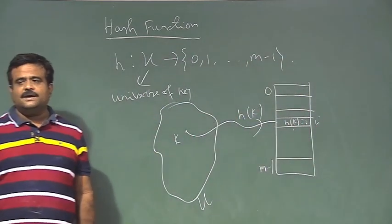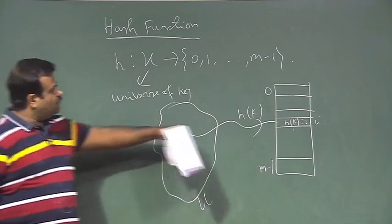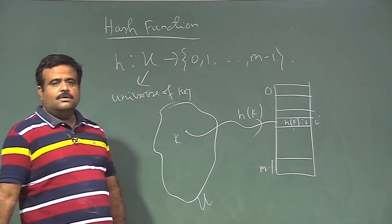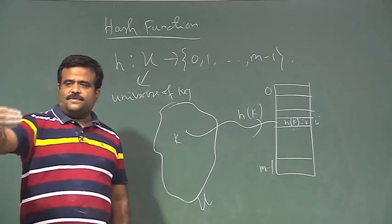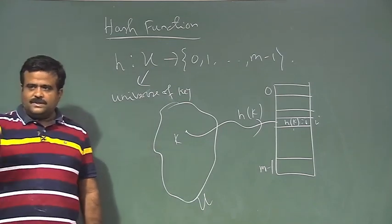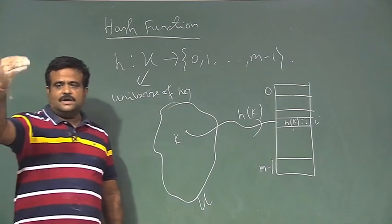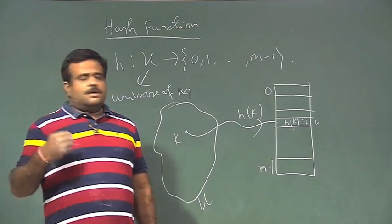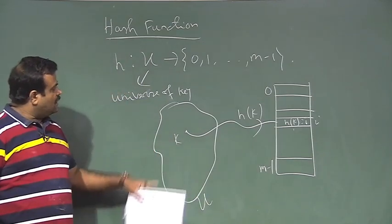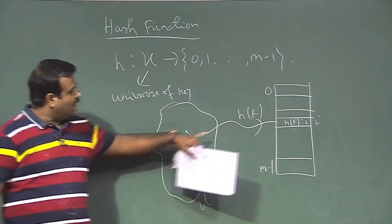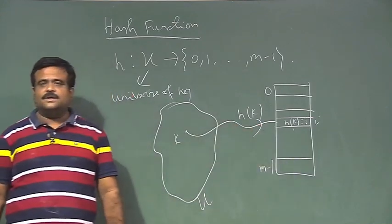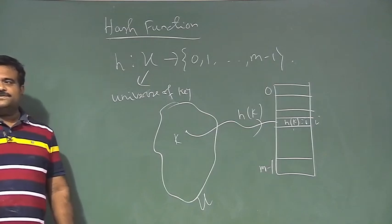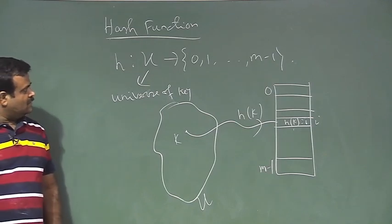The hash function takes a key and gives us a slot — basically a value from 0 to m-1. If we are allowed a table size up to m, our hash function maps any key to a slot in the range 0 to m-1. Any such function is called a hash function.